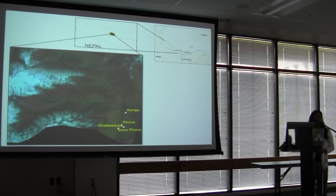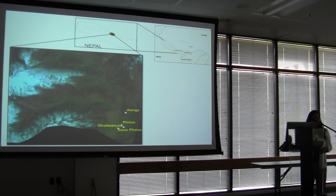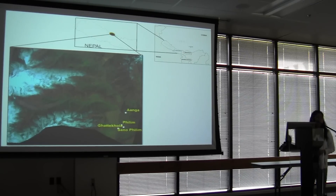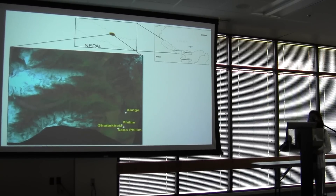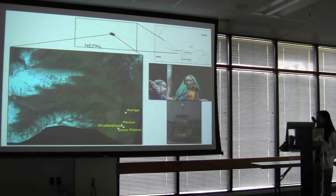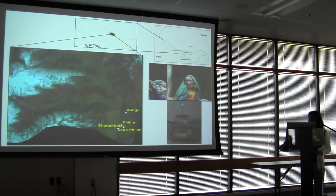Manaslu Conservation Area is in Nepal, situated in the central part of Nepal. It was established in 1998 as a conservation area and borders the Tibetan region in the north. It constitutes about four different ethnic communities, but for this presentation I'll only talk about the Gurung ethnic communities who live around the southernmost boundary of the conservation area. The Gurungs are influenced both by Tibetan Buddhist and Hindu cultural practices.